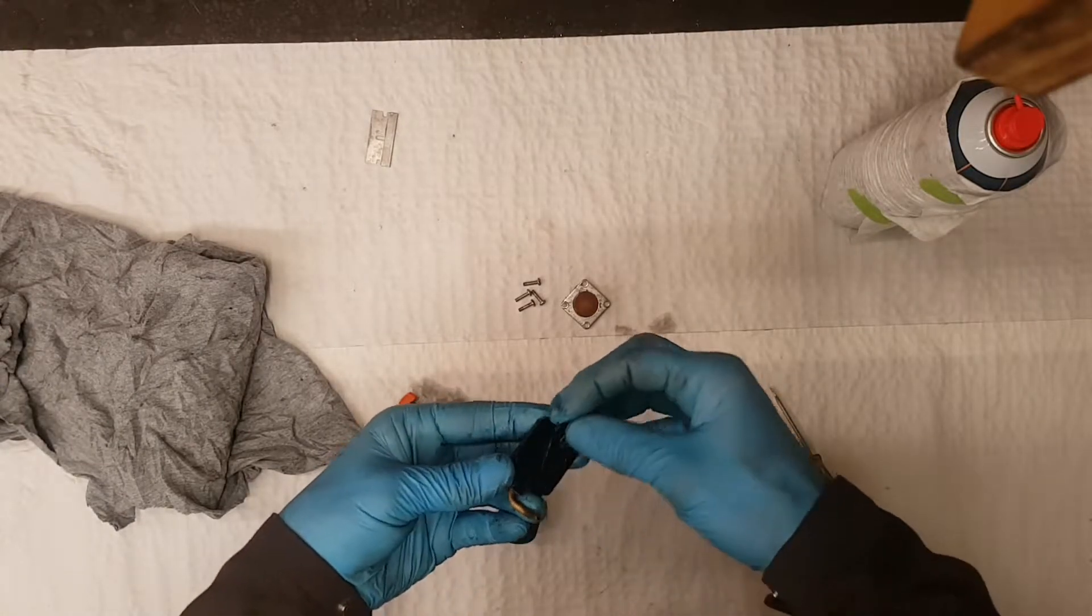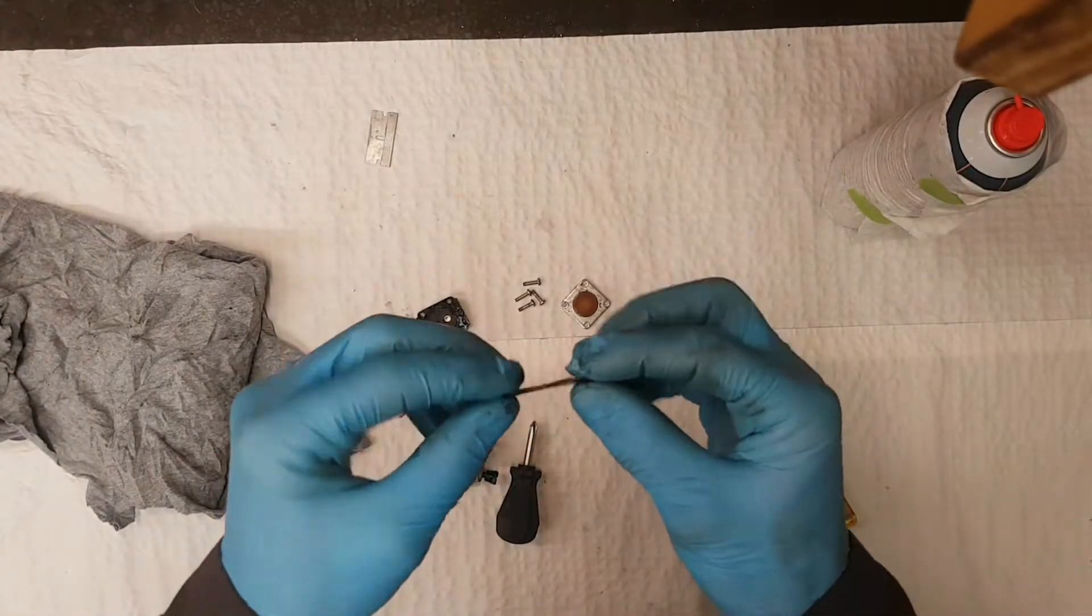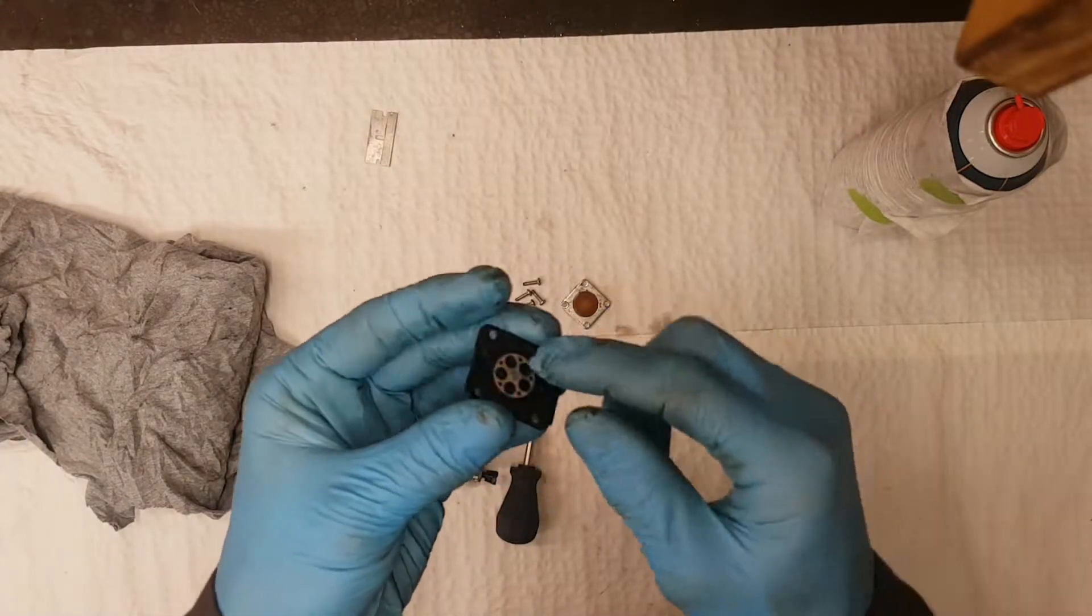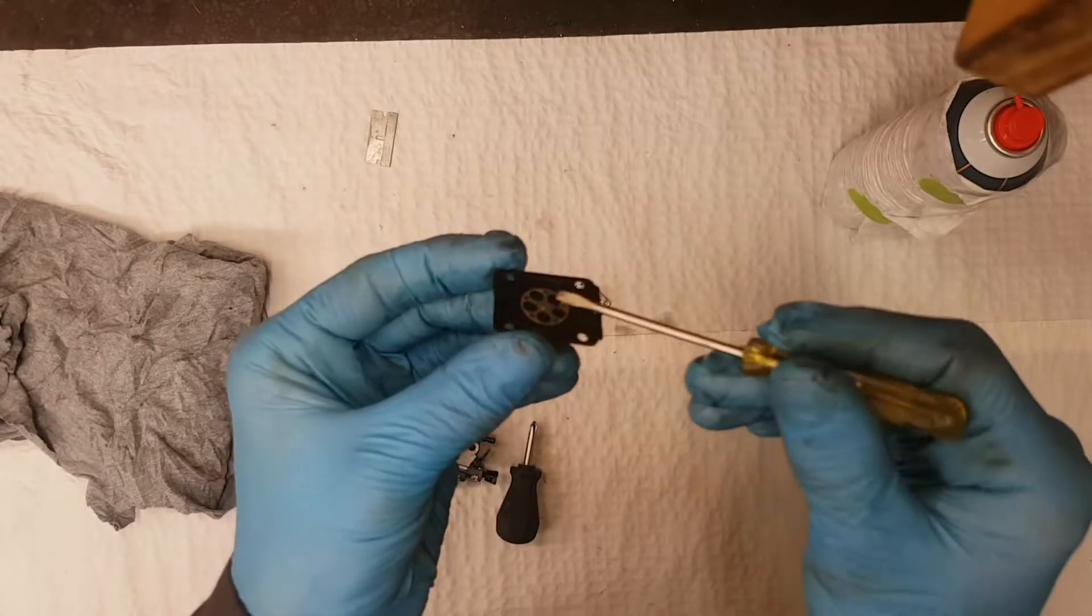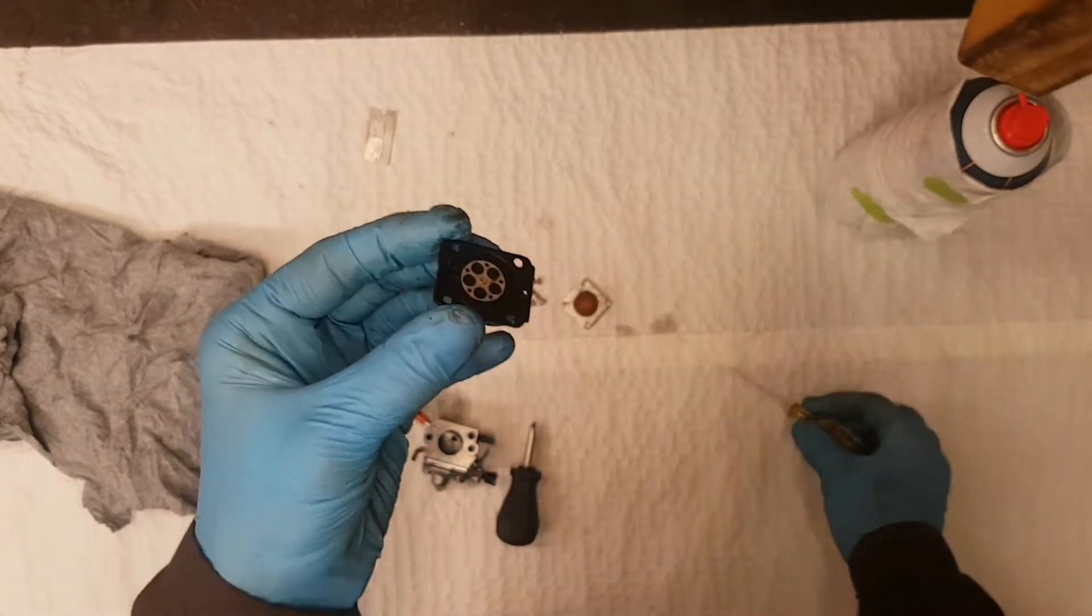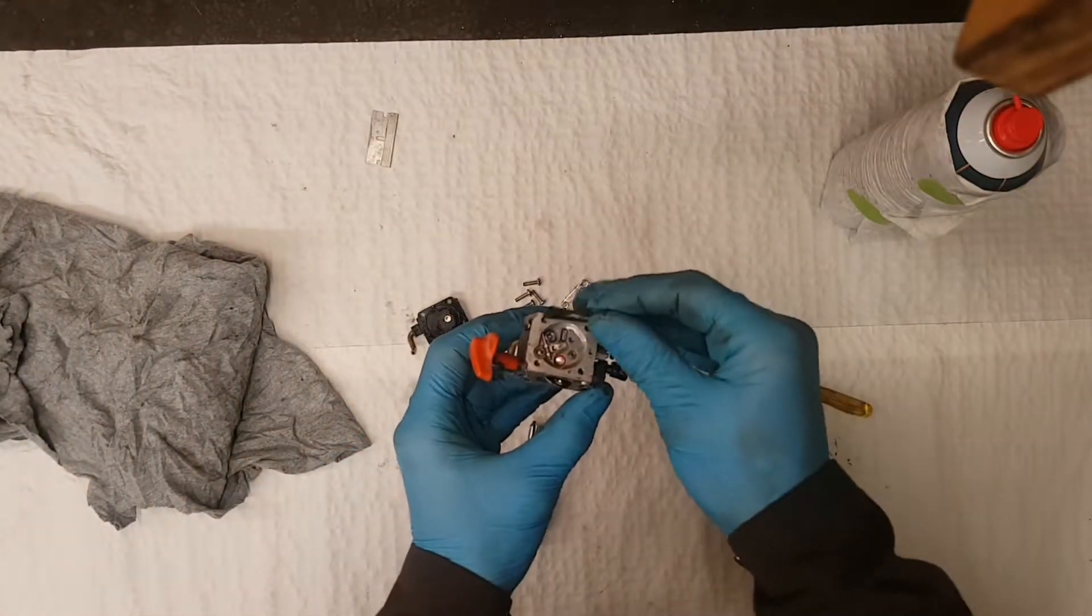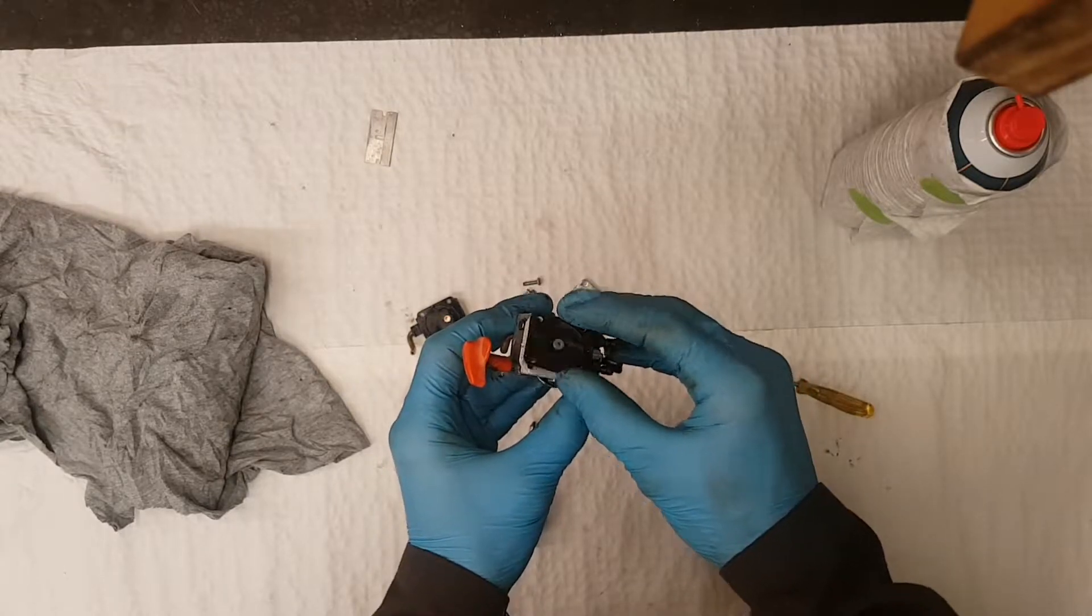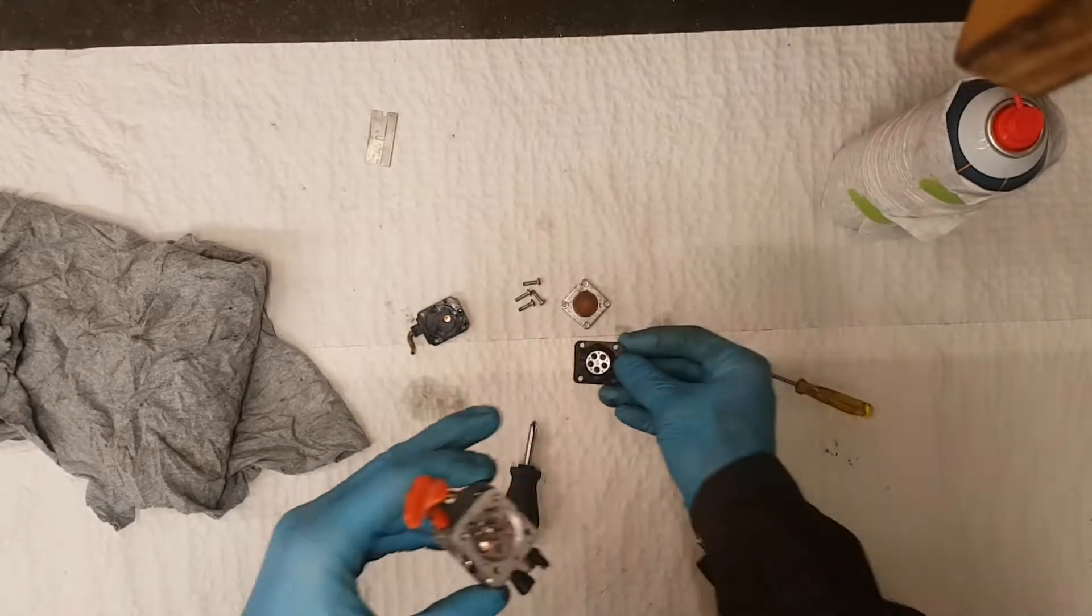Right here we're going to remove your fuel diaphragm. Something else to note is on this particular one, when you remove it you might not always see it, but there's actually a gasket on the side of this right here. This gasket needs to face the bottom, needs to be facing this way, right?